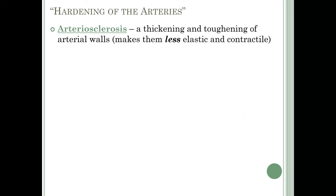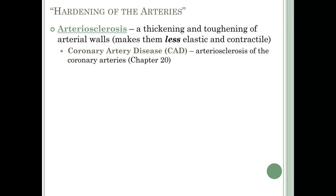Let's talk about two conditions related to arteries. The first is commonly called hardening of the arteries, but the clinical term is arteriosclerosis — a thickening and toughening of arterial walls that makes them less elastic and contractile. Coronary artery disease (CAD) is arteriosclerosis of the coronary arteries. Arteriosclerosis of arteries supplying the brain can lead to cerebrovascular accidents, another name for strokes.